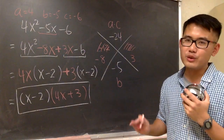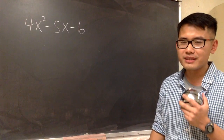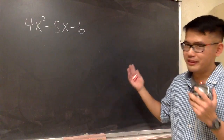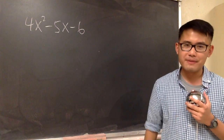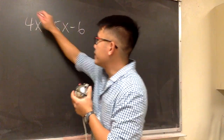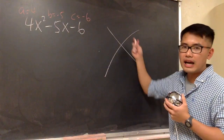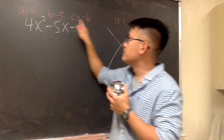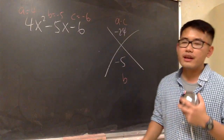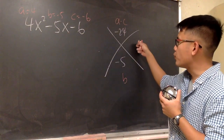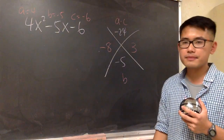Now let's check out the second method. We still have to do the AC part. I don't know the technical name for this method, so I'll call it the lazy AC method. We go through the same setup: a equals 4, b equals negative 5, c equals negative 6. Draw the big X, put a times c on top — 4 times negative 6 is negative 24 — and b equals negative 5 at the bottom. Do the guess and check again: the correct choice is negative 8 and positive 3.